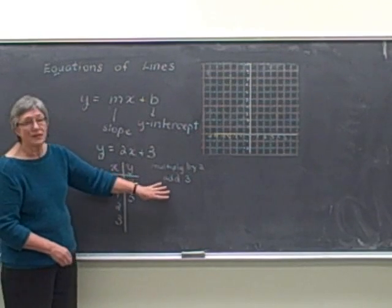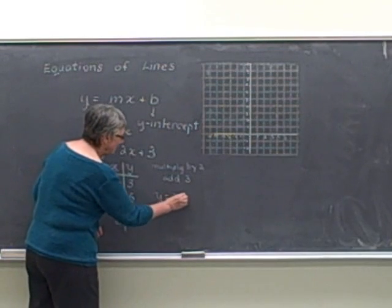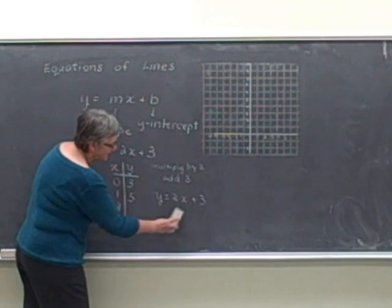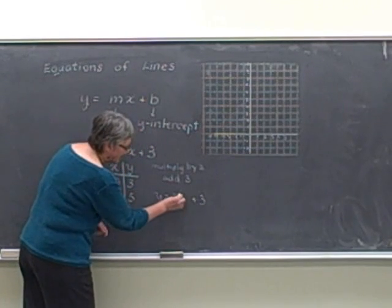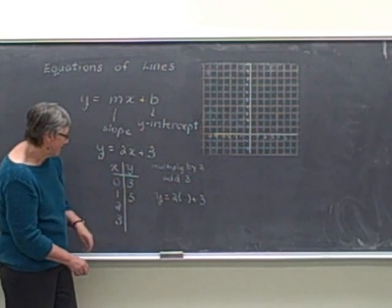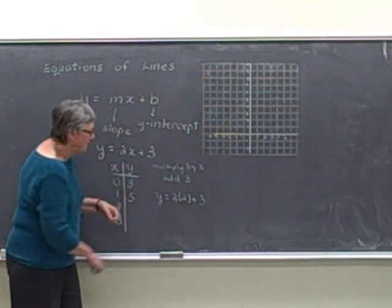We can also just use the formula directly to find these points. My formula is y equals 2 times x plus 3. We're going to change our x values. So instead of putting the x there, I'm just going to put parentheses. And now I'm going to put my x values in the parentheses. So here x is equal to 2. I put the 2 in parentheses.